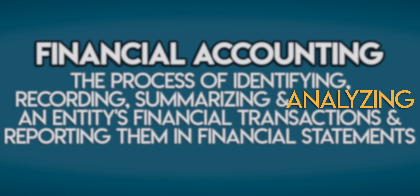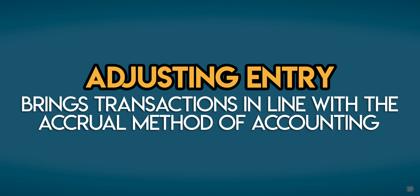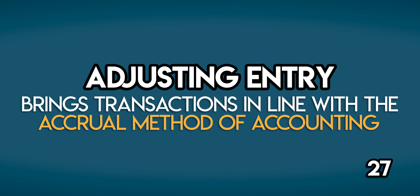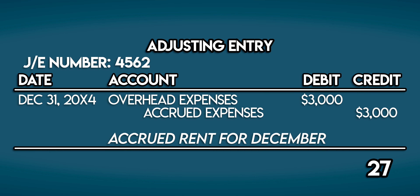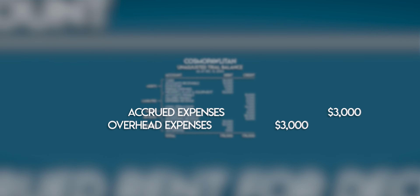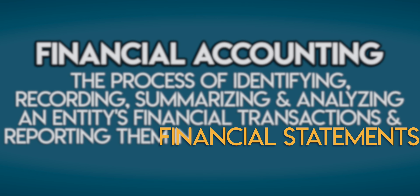At the end of each accounting period, we analyze the balances of every account in the trial balance and post adjusting entries to make sure all transactions align with the accrual method of accounting — so that revenue is recognized as it's earned and expenses are recorded as they are incurred. Once the adjusting entries have been posted, we're ready to make financial statements.